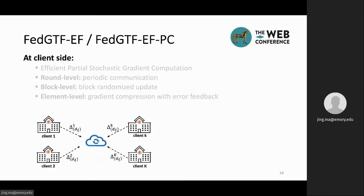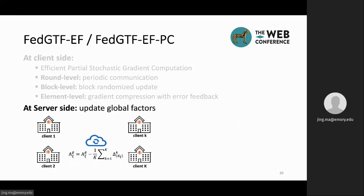With the compressed model updates, at the communication round, each client will send the compressed updates to the server. Then on the server side, the server will sum up all the compressed updates, and then update the global factor. And then the server will broadcast the global factor back to each client.